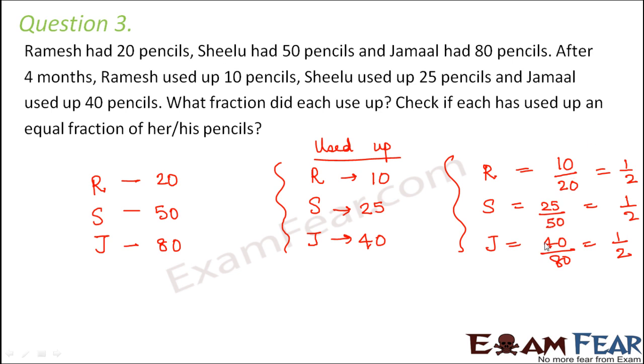So we find that 10 by 20, 25 by 50 and 40 by 80, these are all equivalent fractions. Now check if each used up an equal fraction of his or her pencils. Yes, they all used up equal fraction because each of them used up half of their pencils.